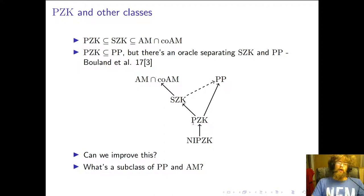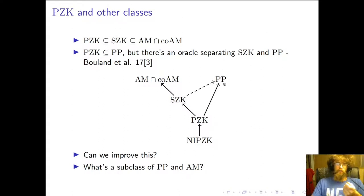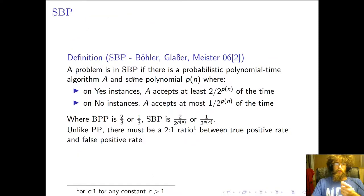So our question is: can we get a tighter bound? Can we put NIPZK or even PZK into something below these two? To do that, we need some class below these two, so we're going to look at SBP — small bounded error probability.